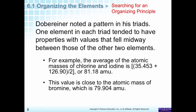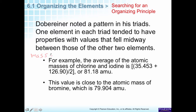Döbereiner noticed a pattern in his triads. He took chlorine and iodine and looked at their masses. Chlorine has a mass of about 35 and iodine has a mass of about 127. If he added those together and found their average, he came up with about 81. Bromine's mass is 79.9, very close to 81. So he was able to predict a repetition occurring based on these masses, and he could see that repeating properties had to do with atomic masses.